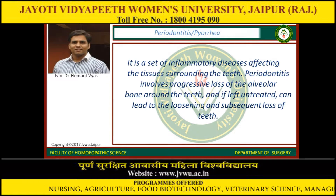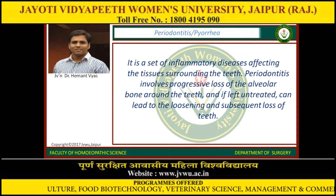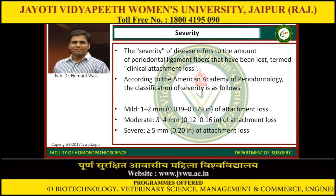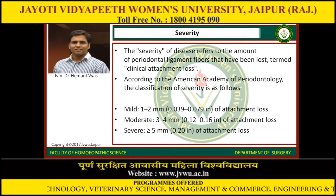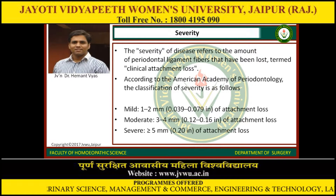The next disease is periodontitis, or pyria. It is a set of inflammatory diseases affecting the tissues surrounding the teeth. Periodontitis involves progressive loss of alveolar bone around the teeth and, if left untreated, can lead to loosening and subsequent loss of teeth. Severity is evaluated by clinical attachment loss. According to the American Academy of Periodontology: mild periodontitis is 1–2 mm of attachment loss, moderate is 3–4 mm, and severe periodontitis is more than 5 mm of attachment loss.